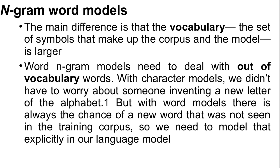We need to model out-of-vocabulary words explicitly in our language model. This can be done by adding just one word to the vocabulary: UNK, standing for unknown word. We can estimate n-gram counts for UNK by going through the training corpus — the first time any novel word appears, it is previously unknown, so we replace it with the symbol UNK; all subsequent appearances of the word remain unchanged. Then we compute n-gram counts for the corpus as usual, treating UNK just like any other word. When an unknown word appears in the test set, we look up its probability under UNK.